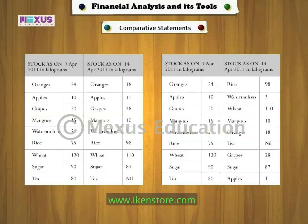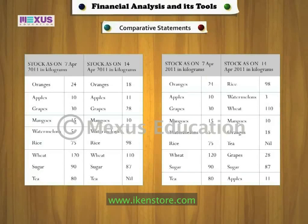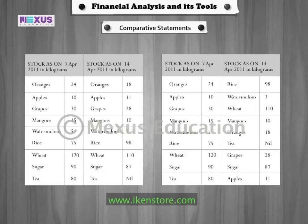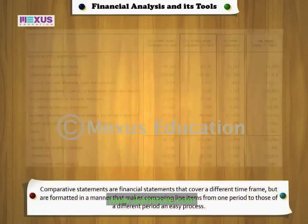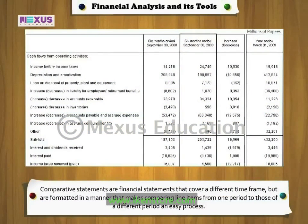From the given two statements, which one of them is easy to understand and compare? Obviously, the statement to the left. The statement to the left has similar items listed adjacent to each other, which makes it much easier to compare them. Against this, the statement to the right contains exactly the same data, but as they are not listed in similar order, it is difficult to arrive at any conclusion instantaneously. Thus, comparative statements are financial statements that cover a different timeframe, but are formatted in a manner that makes comparing line items from one period to those of a different period an easy process.